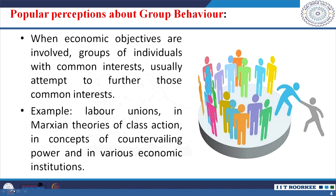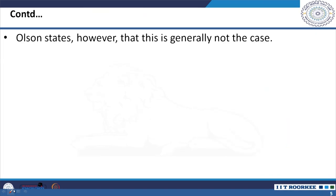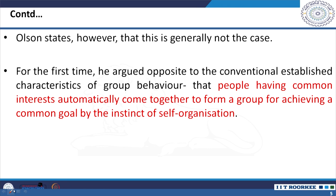The picture of group behavior is that if there is some shared or common interest, people obviously come together and form a group. However, Olson opined that this perception is not generally the case. For the first time, he argued that this may be opposite to the conventional belief on group behavior — that people having common interest will automatically come forward to achieve a shared goal out of self-instinct.